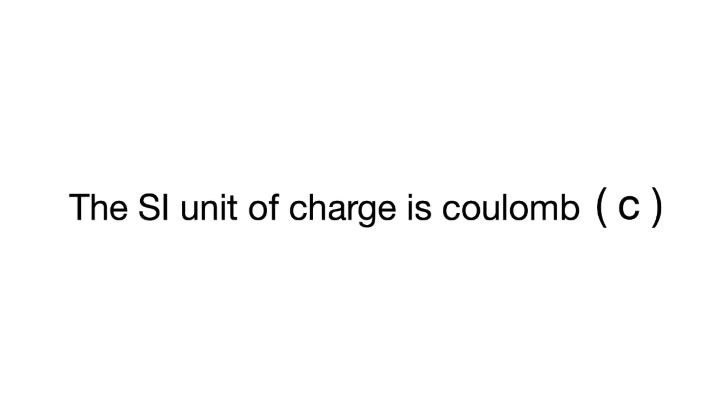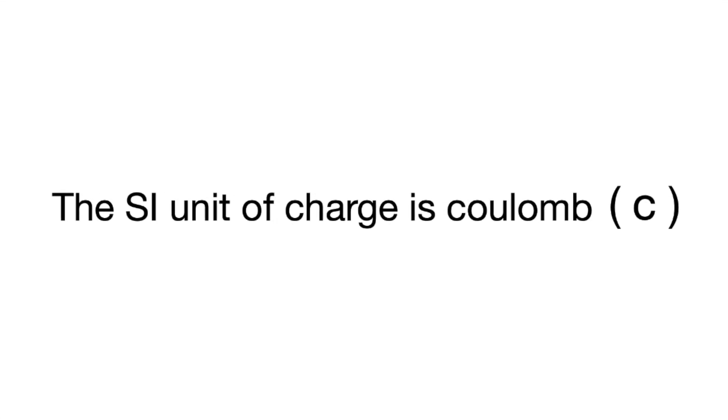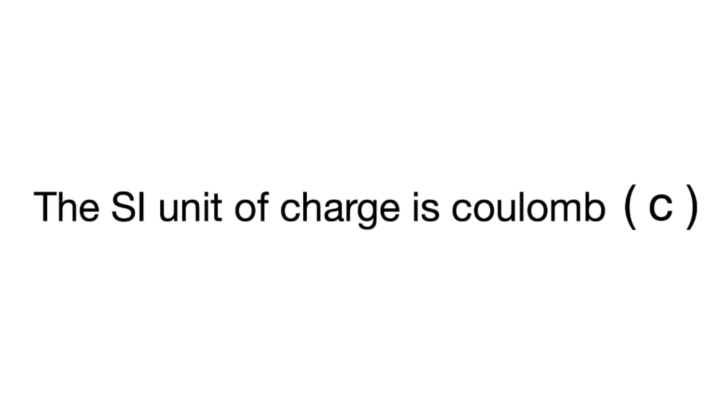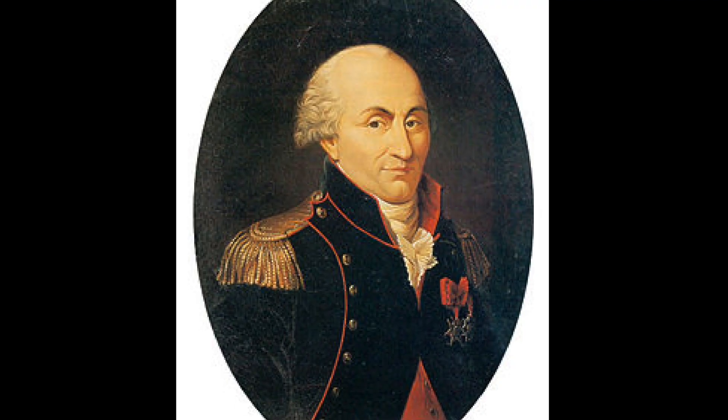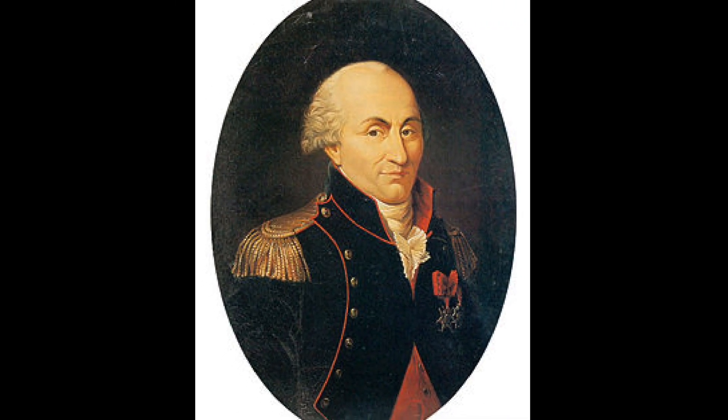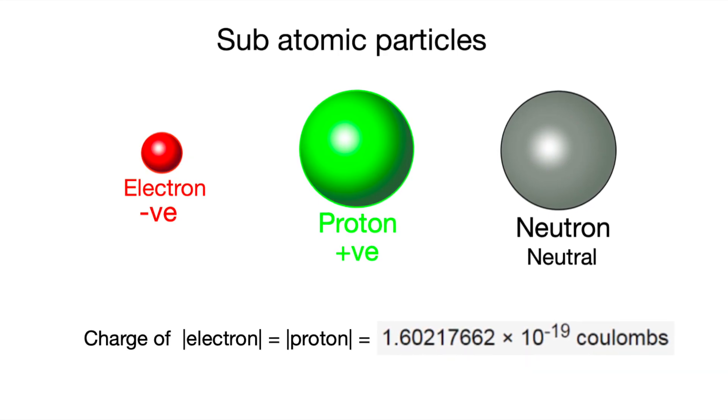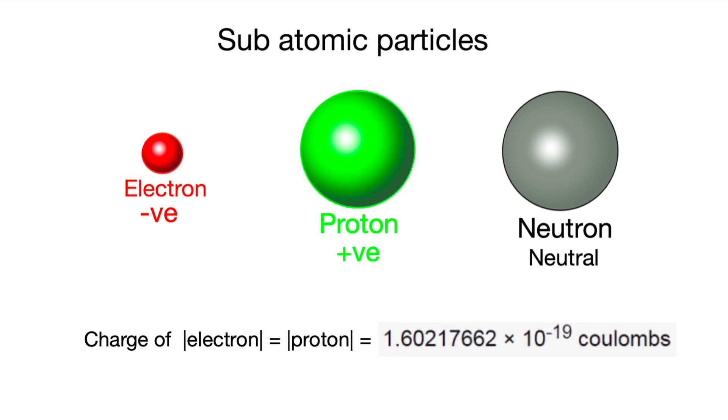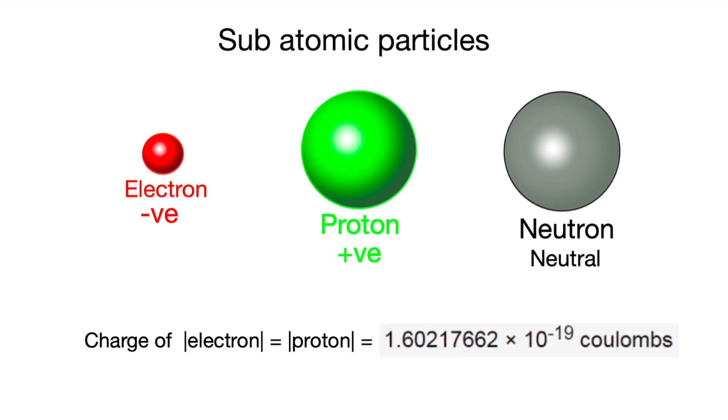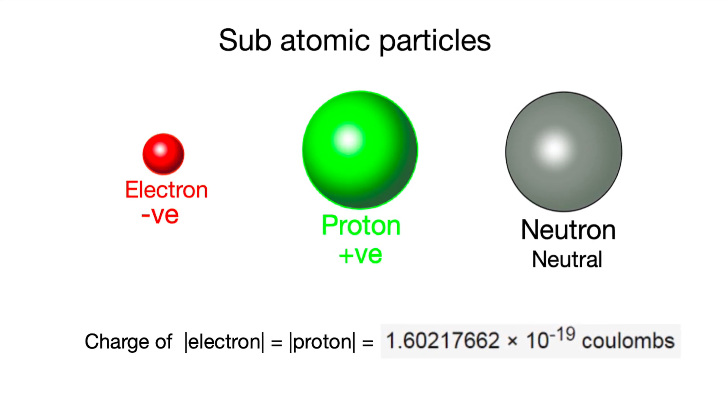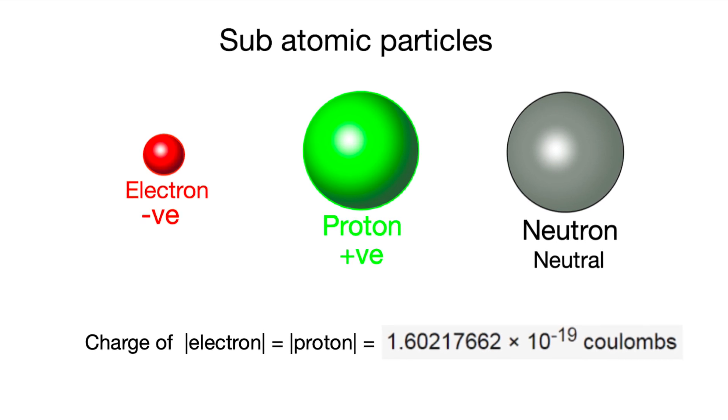When it comes to representing charges mathematically, we use the unit coulomb, which is named after the great scientist Charles-Augustin de Coulomb. The proton and electron carry the same amount of charge, which is equal to 1.602 times 10 to the power minus 19 coulombs, but they are opposite in polarity.